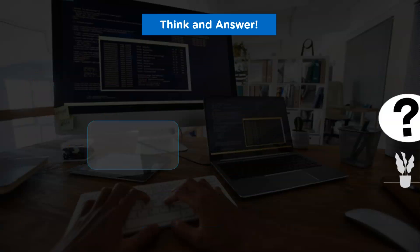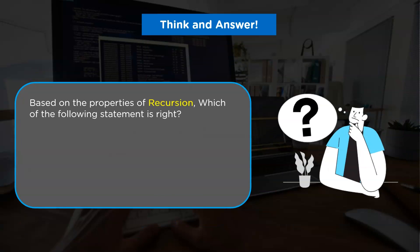Now here is the interesting question that we want you all to answer. Based on the properties of recursion that we have discussed till now, which of the following statement seems right to you? The options that we have are recursion is always better than iteration. Option B, recursion uses more memory compared to the iteration.